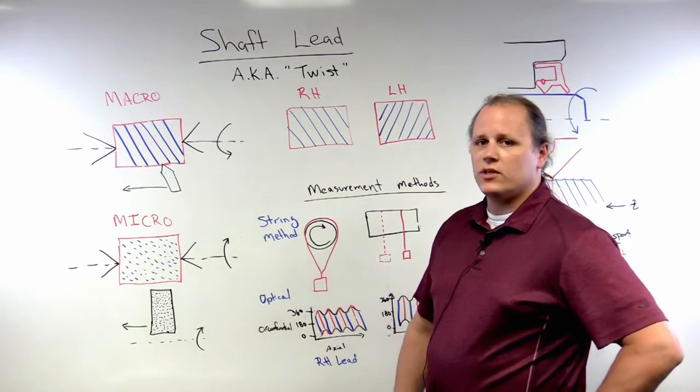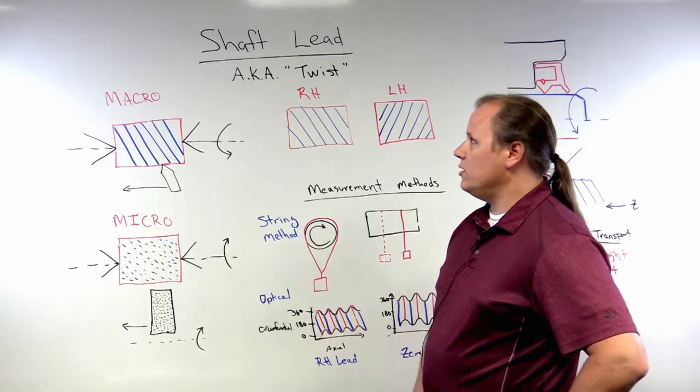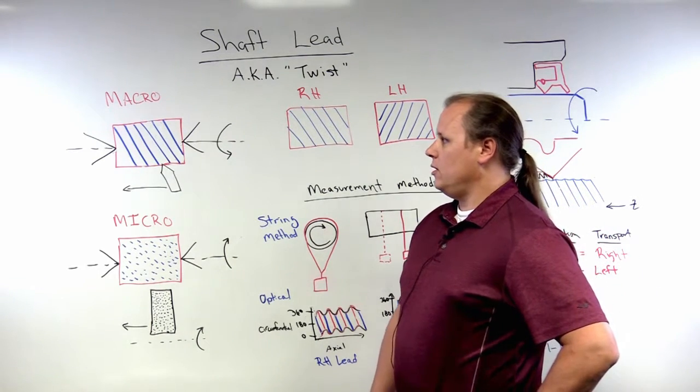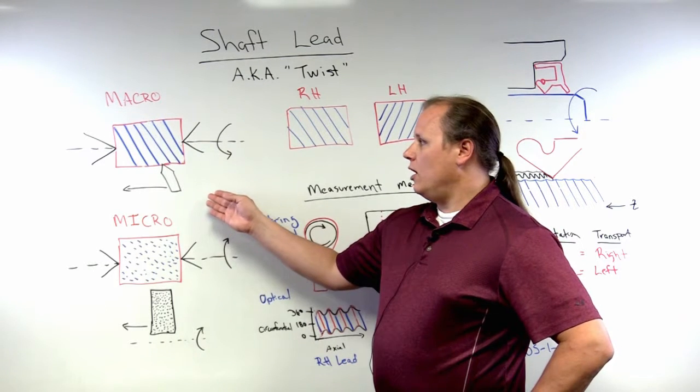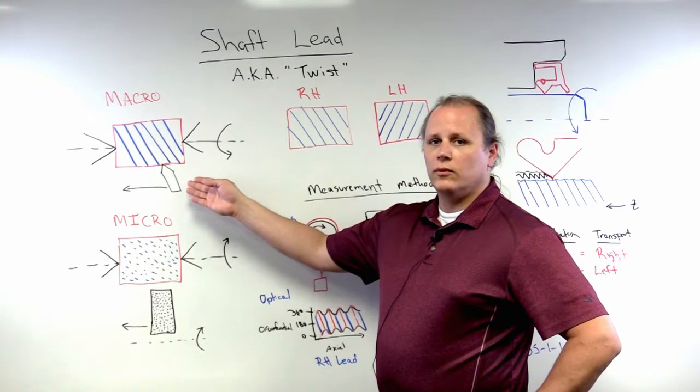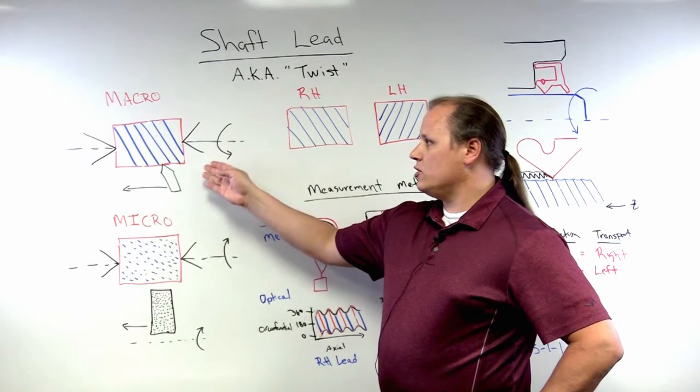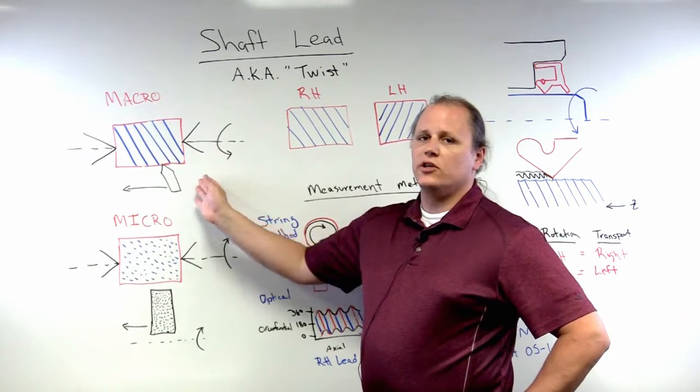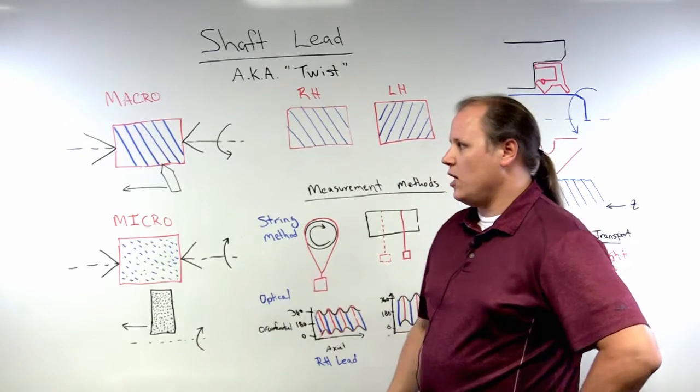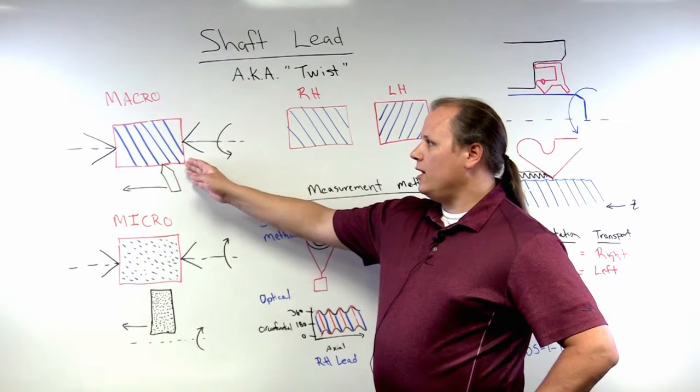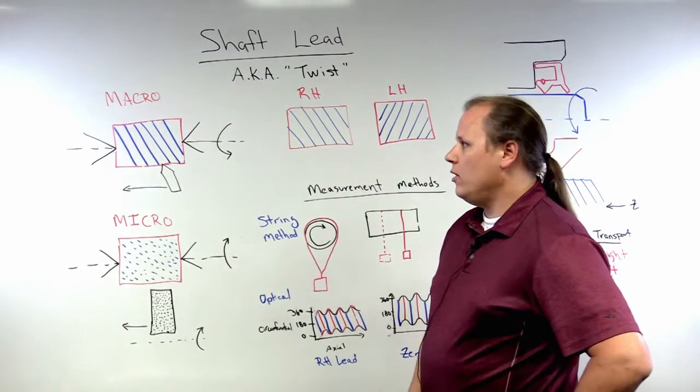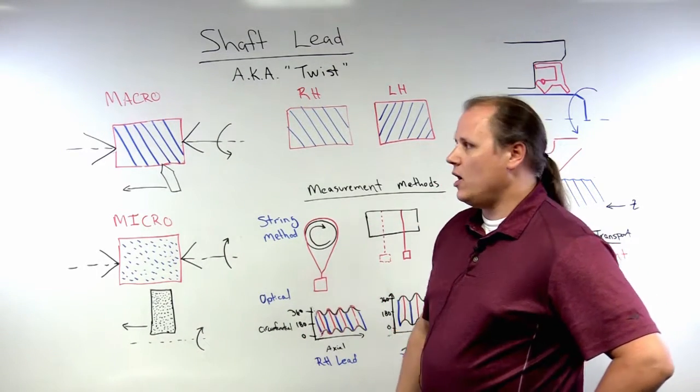One of those characteristics is shaft lead. A typical manufacturing process may be the use of a single point tool against a rotating shaft where the tool is actually traversing the surface of the shaft. This operation will result in a spiraling groove pattern around the circumference of the shaft.